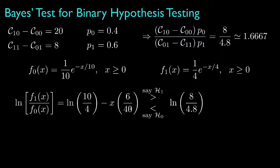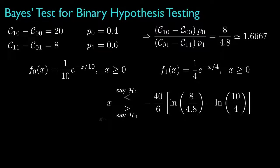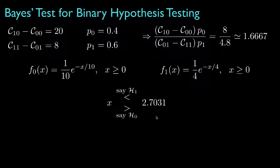We won't change the inequality if we subtract the logarithm of (10/4) from both sides, and that leaves us with a test that multiplies the observation by negative 6/40 before comparing to the threshold. Because it might be cleaner to specify the test as a simple comparison with the observation, we could multiply both sides by negative 40/6. But because we're multiplying by a negative number, we'd need to reverse the inequality. The resulting test then simply compares the observation to a threshold determined by the means for the two probability densities, the costs, and the prior probabilities. When we put in those particular values, this corresponds to partitioning the observation space into the region above and below approximately 2.7031. Observations below are classified as hypothesis 1, and observations above are classified as hypothesis 0.